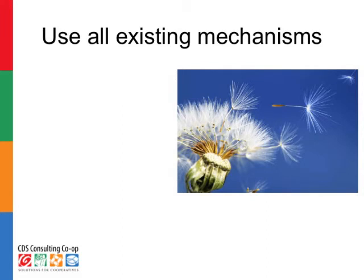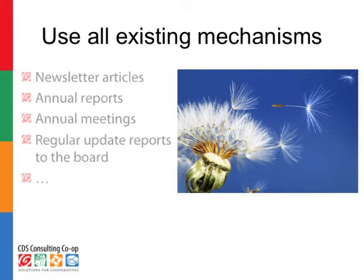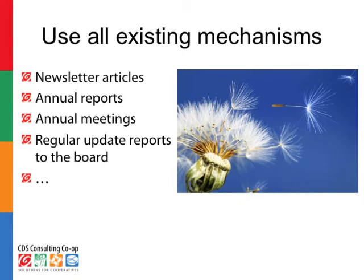All co-ops have some form of these tools available, whether it's printed material available by the register, whether it's electronic, online, web-based, or an email blast. Think less about the specific mechanisms of delivery and more about the kind of tool it is. Newsletter articles, annual reports, annual meetings — those are very important face-to-face moments — and the chance for regular updates from operations or management to the board. All these are available and easy to use to communicate this wonderful story.